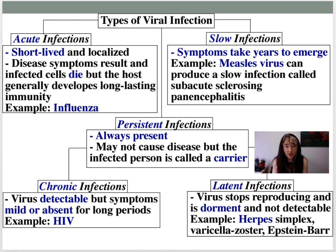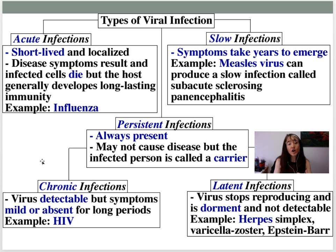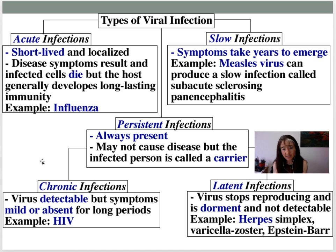There are also persistent infections — viruses that many of us have all the time. Fever blisters from herpes viruses are an example: they're always in us, but only flare when we get too much sun or become immunosuppressed. These viruses may be largely dormant and not causing symptoms, though you're always a carrier. Chronic infections like HIV are always detectable, but symptoms may be mild or absent for very long periods — sometimes 20 years — with most eventual symptoms coming from secondary infections.